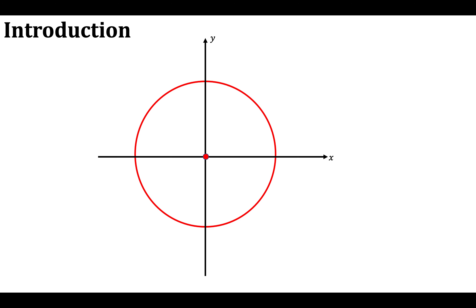Say I've got a point on the circumference of the circle — let's say it's (3, 4). Now I have two points so I'm able to find the radius of that circle. I can do this by creating a right angle triangle with lengths 3 and 4, and my hypotenuse, which is my radius, is unknown.